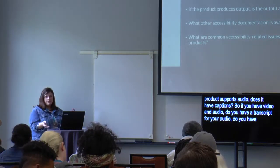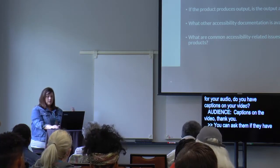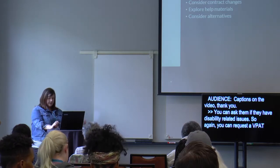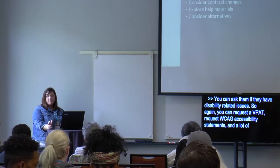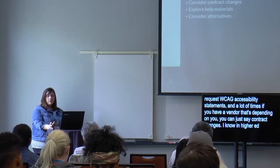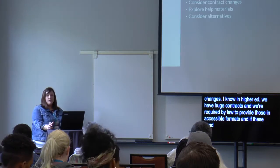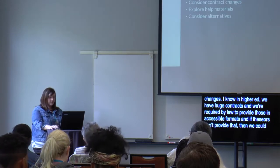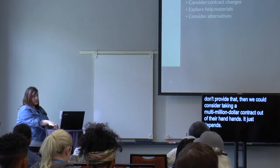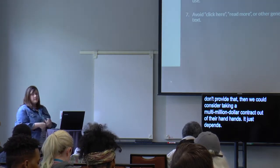Ask vendors if they have accessibility documentation like a VPAT, and ask upfront if they have any known accessibility-related issues. You can request WCAG accessibility statements, and in many cases — especially in higher education — you can consider contract changes. We're required by law to provide content in accessible formats, and if vendors don't comply, we can consider moving a multi-million-dollar contract. Explore resources like the WCAG, W3C website, or WebAIM, and consider alternatives to non-compliant vendors. Always ask for captioned or transcribed versions of any media used.